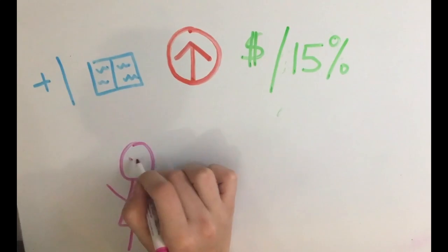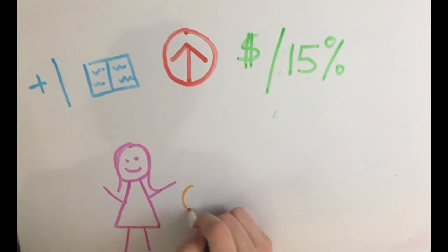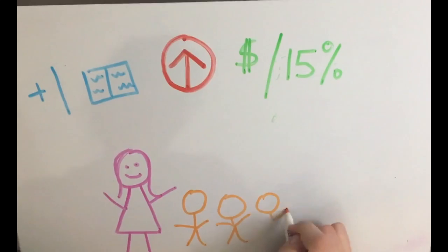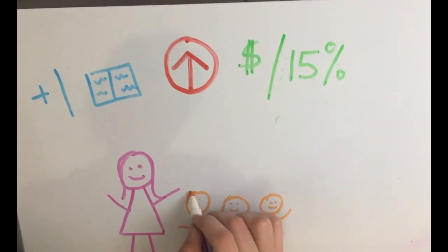Improving female education, and thus the earning potential of women, improves their standard of living and the standard of living for their children, as women tend to invest more of their income in their families than men do.